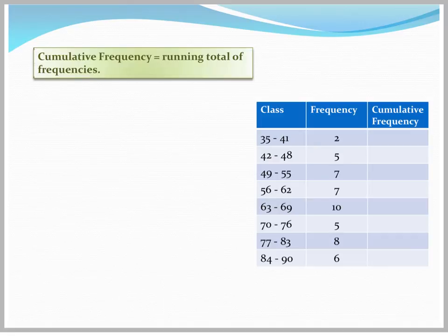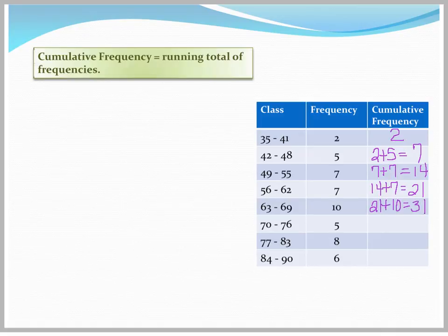So for the first class, our frequency was 2. For the next frequency, cumulative frequency, we add 2 to 5. So it's 2 plus 5 gives us 7. The next frequency is 7 plus 7. It's a running total. And we just keep adding the frequency you just got to the next frequency. So our next running total would be 14 plus 7 gives us 21. And from there, we add 21 to 10 and get 31. And you continue on until you've totaled up all of your frequencies.